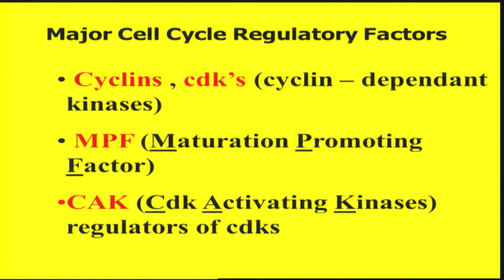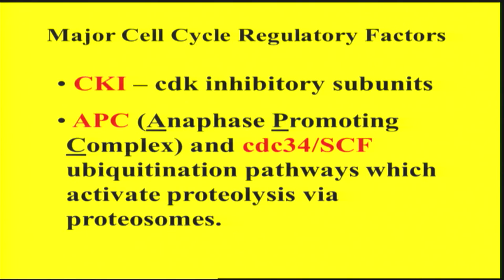The major cell cycle regulatory proteins are cyclins, which exert their impact via cyclin-dependent protein kinases, abbreviated as CDKs. Cyclin plus CDK is MPF or maturation promotion factors. There are also other protein kinases that regulate MPF activity, known as CAK or cyclin-dependent kinase activating kinases. On the other hand, there are also CKI, cyclin-dependent kinase inhibitory subunits, and APCs, anaphase promoting complexes.